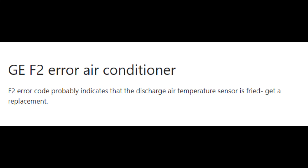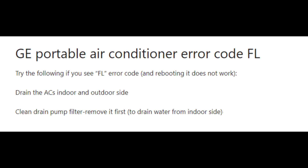Another error code you may see on a GE portable air conditioner is FL. If you see FL on your GE portable air conditioner and power cycling has not resolved it, you may need to clean the drain pump filter. Consider draining your appliance first, since FL indicates a problem with water somewhere in the system. Once drained, if the error persists, clean the drain pump filter.